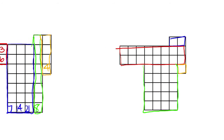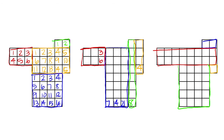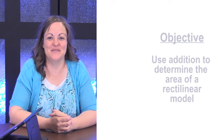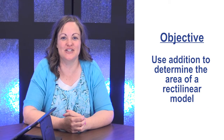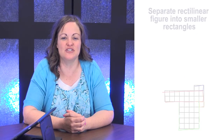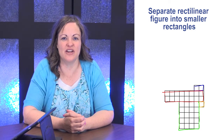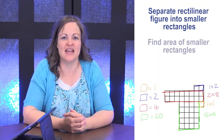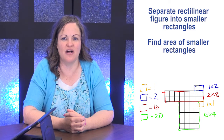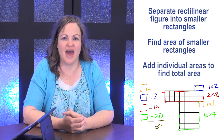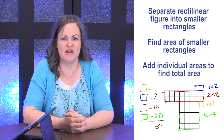It did not matter how I divided my rectilinear figure into rectangles, because I was still able to determine the area of the original figure by adding the smaller rectangles together. In this lesson, we learned how to use addition to determine the area of rectilinear models by following these steps: first, separate rectilinear figures into smaller rectangles; next, find the area of each small rectangle; finally, add the individual areas together to get the total area of the original rectilinear figure.